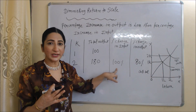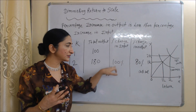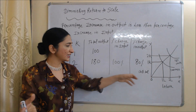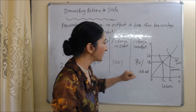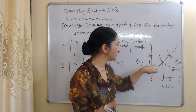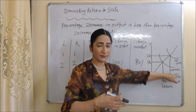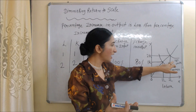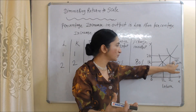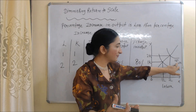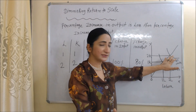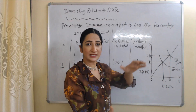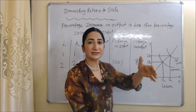Since percentage change in output is less than percentage change in input, this is called diminishing returns to scale. The same is shown in the diagram: one labor and one capital gives 100 units of production. When we increase both inputs from one to two, output increases from 100 to 180 units. Percentage change in input is 100% but percentage change in output is only 80%, so this is called diminishing returns to scale.